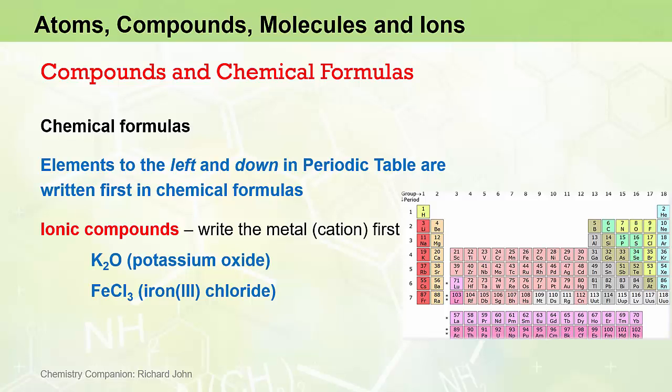FeCl3 is the chemical formula for iron(III) chloride. We can see that iron Fe sits to the left of chlorine Cl, so again the metal gets written first.